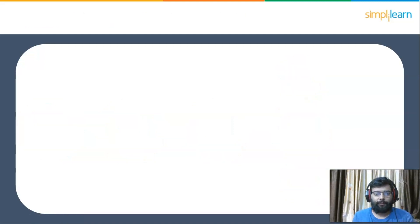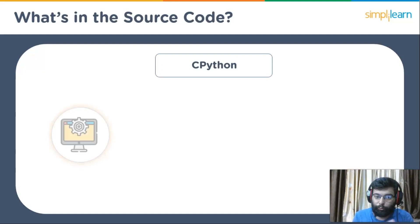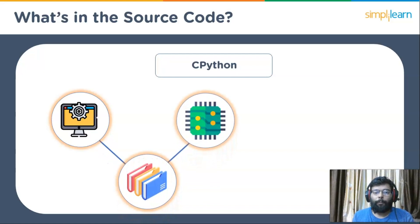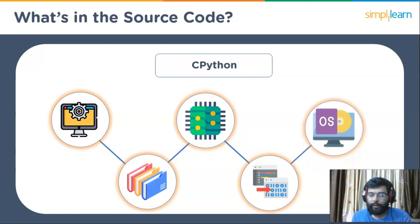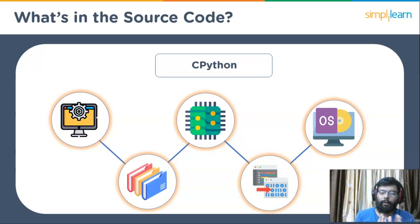Now let's look at some basic concepts of CPython source code. The CPython source distribution comes with a whole range of tools, libraries, and components. To compile CPython from source code, you need a C compiler and some build tools according to your OS. To download a copy of the CPython source code, you can use Git to pull the latest version to a working copy locally.